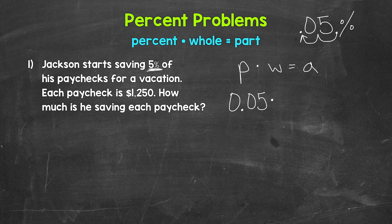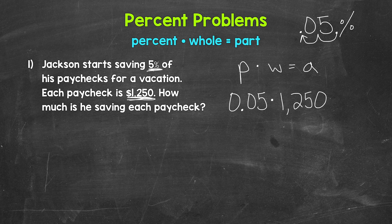So 0.05 times the whole equals the part. Now we need to identify the whole and the part. Each paycheck is $1,250. We're looking for how much he's saving each paycheck, so the $1,250 is the whole paycheck, and we're looking for the part of the paycheck he is saving. So the whole is $1,250, and the part is unknown — that's what we're figuring out, so we keep our variable A. We're finding 5% of $1,250 equals what. We just have a one-step equation, and A is already isolated on the right side.